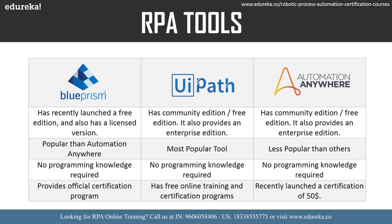The differences between UiPath, Blue Prism, and Automation Anywhere are as you can see on my screen. Blue Prism has recently launched a free edition and also has a licensed version. UiPath has a free community edition and also provides an enterprise edition. Automation Anywhere has both the community edition and the enterprise edition.